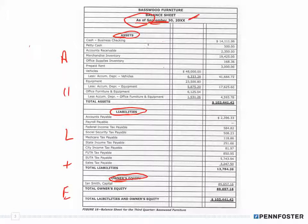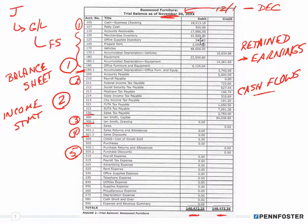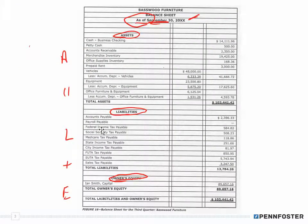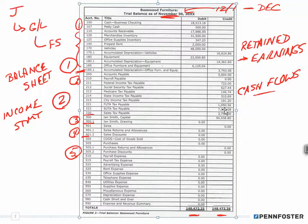Permanent accounts always have a running balance; you're never closing them out to zero, because we're looking at information since the beginning of the business — however long that was ago. For this particular balance sheet dated September 30th, the business might have been in business one month, one year, or 100 years. What matters is that it's the information as of this particular date since the business began. All you're really doing is taking the figures from the trial balance and putting them on your balance sheet — same with liabilities and equity.